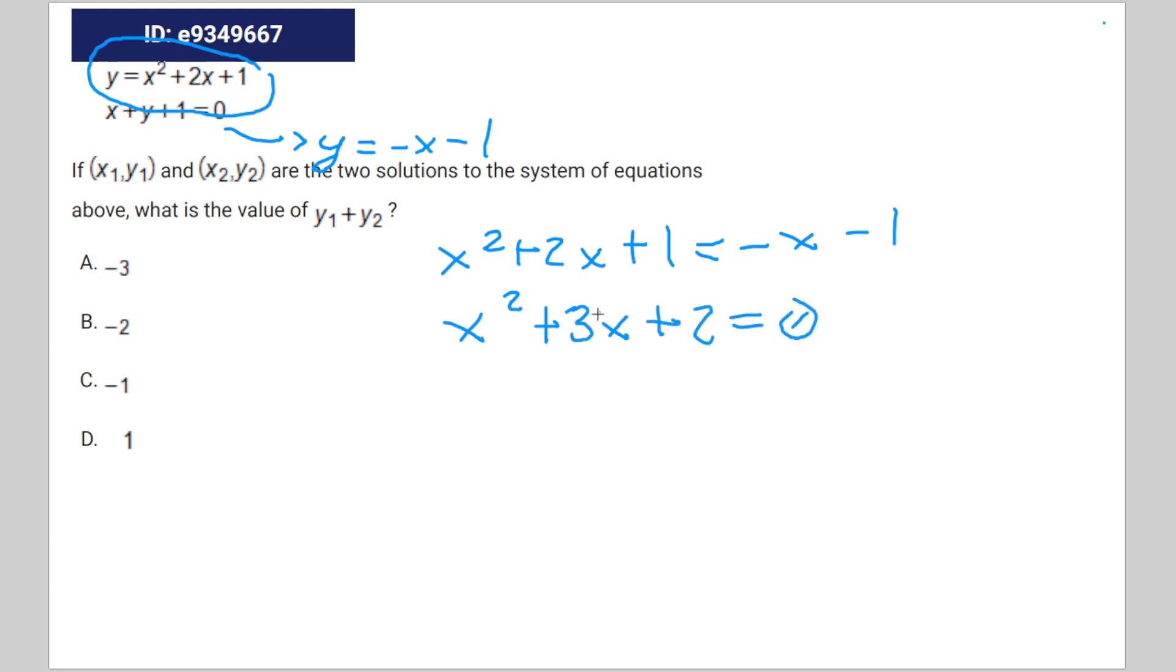What two numbers add up to 3 but multiply to 2? That's going to be positive 2 and positive 1. Therefore, the answers are negative 2 and negative 1.